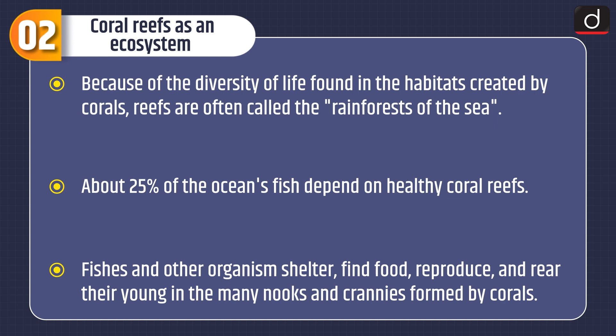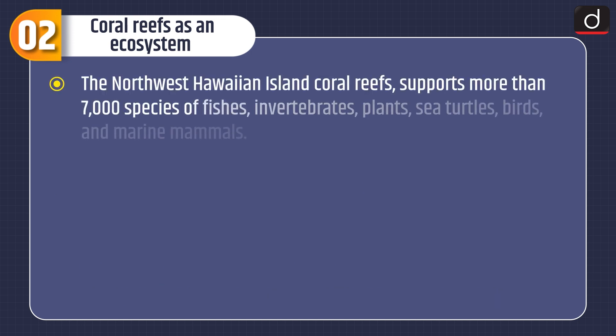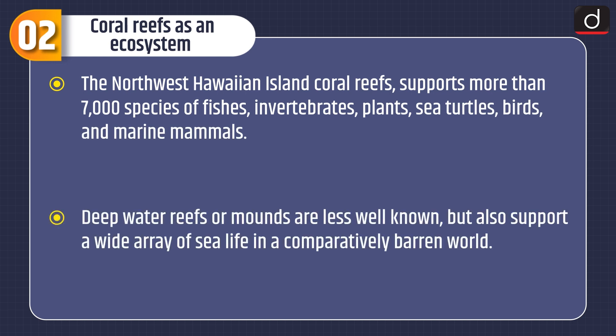Fishes and other organisms shelter, find food, reproduce, and rear their young in the many nooks and crannies formed by corals. The northwest Hawaiian island coral reefs support more than 7,000 species of fishes, invertebrates, plants, sea turtles, birds, and marine mammals. Deepwater reefs or mounds are less well-known, but also support a wide variety of sea life in a comparatively barren world.